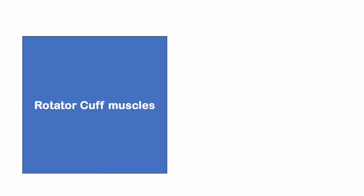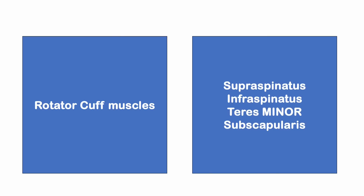Rotator cuff muscles — name the rotator cuff muscles. They are four muscles: supraspinatus, infraspinatus, teres minor, and subscapularis. Remember it is teres minor, not teres major.